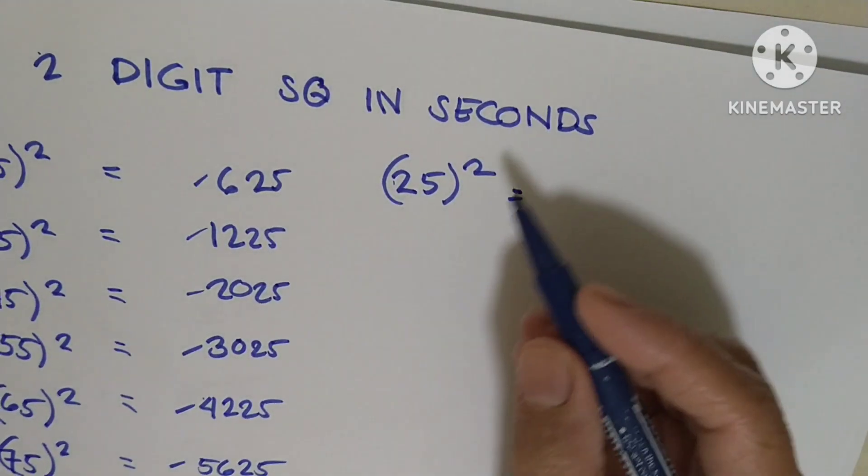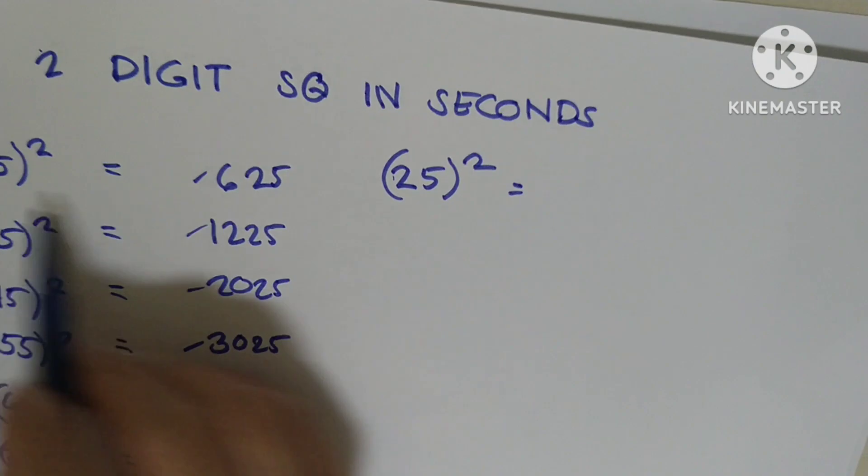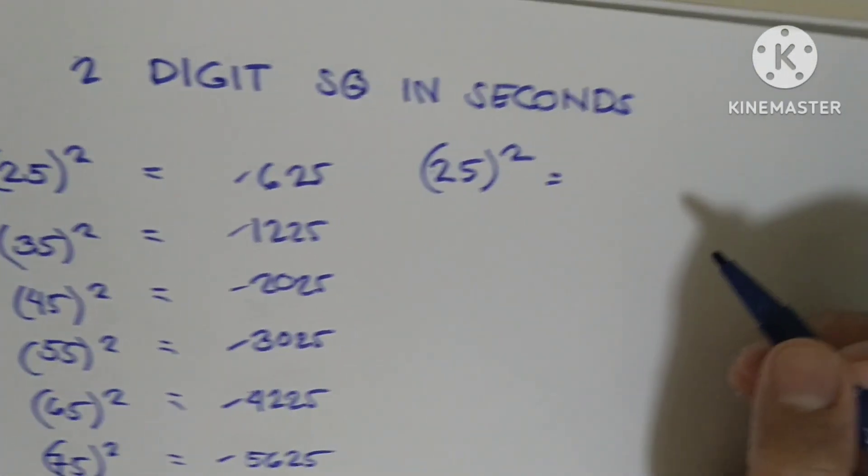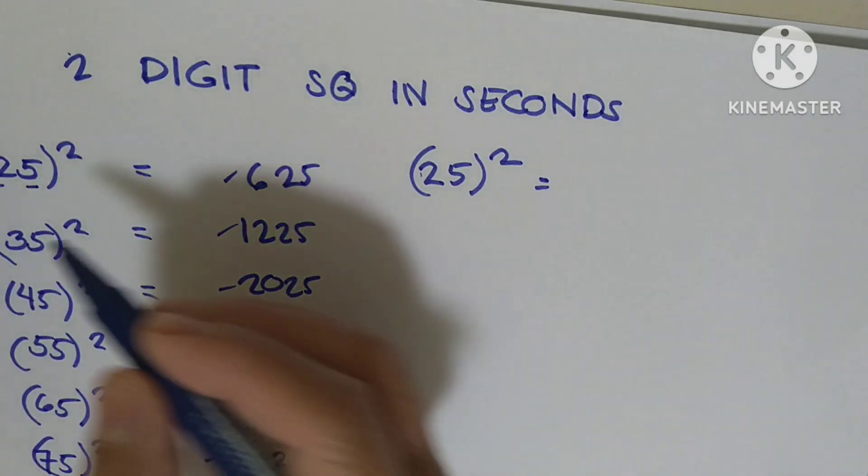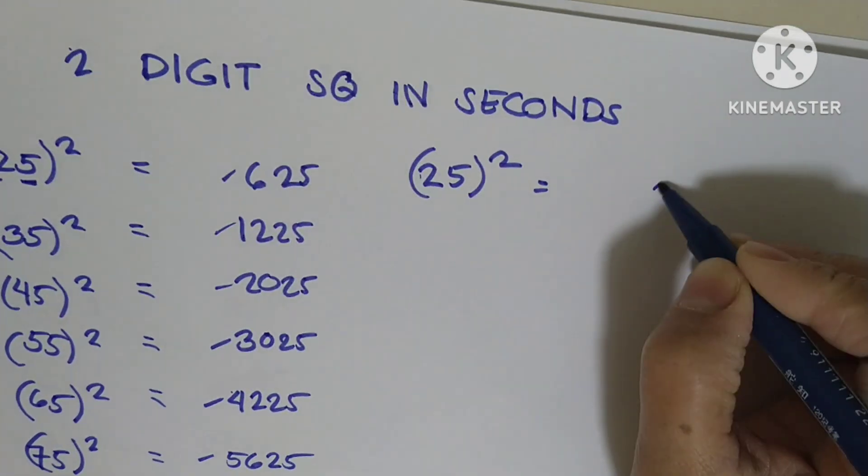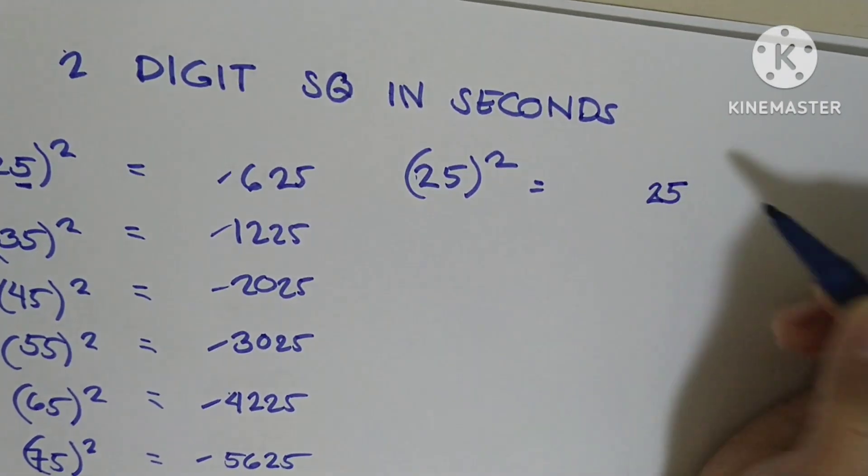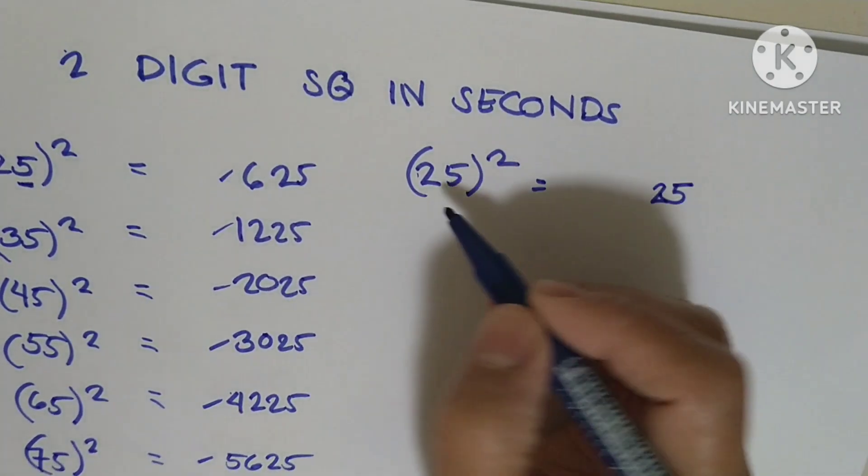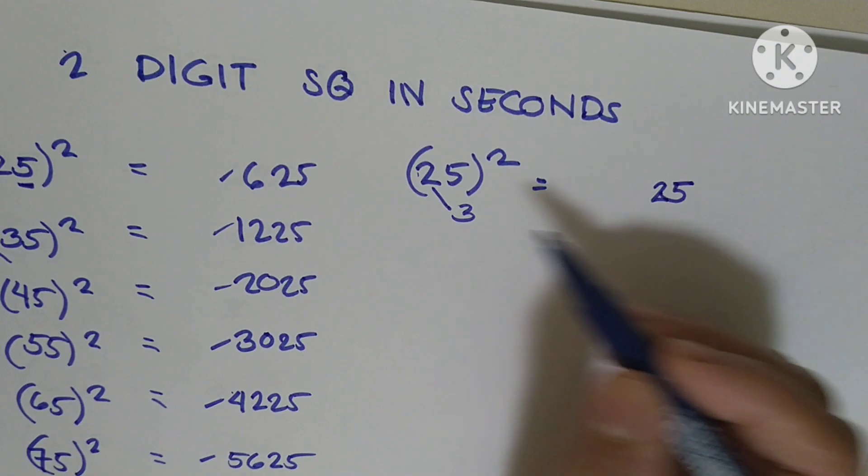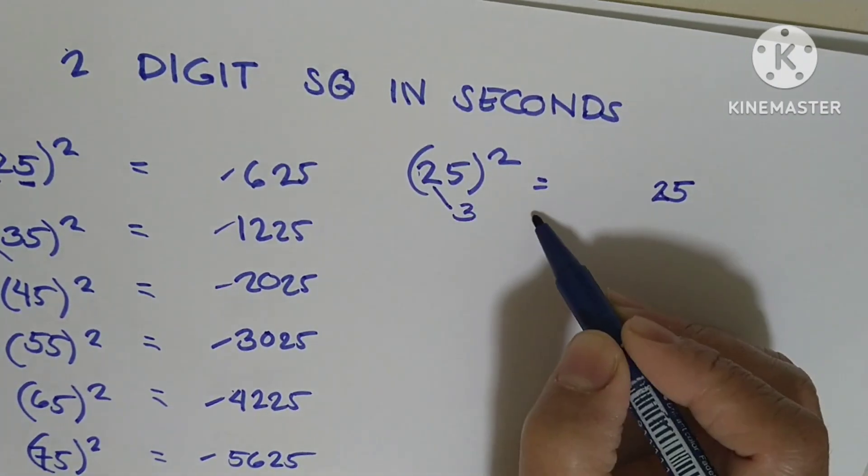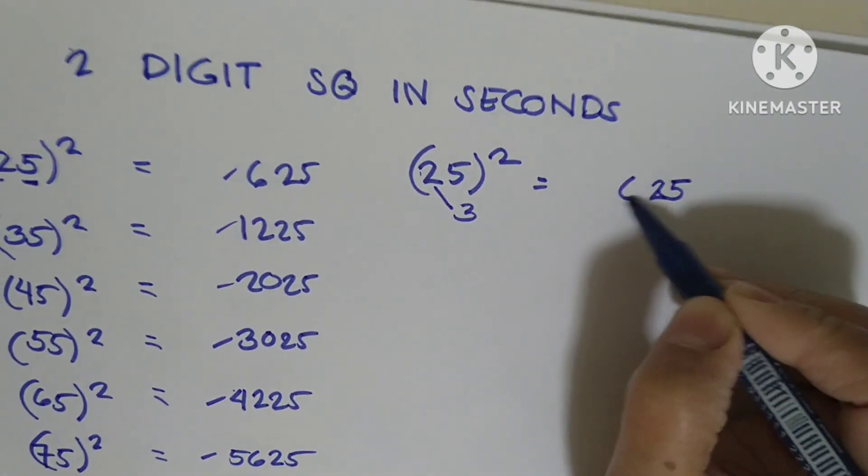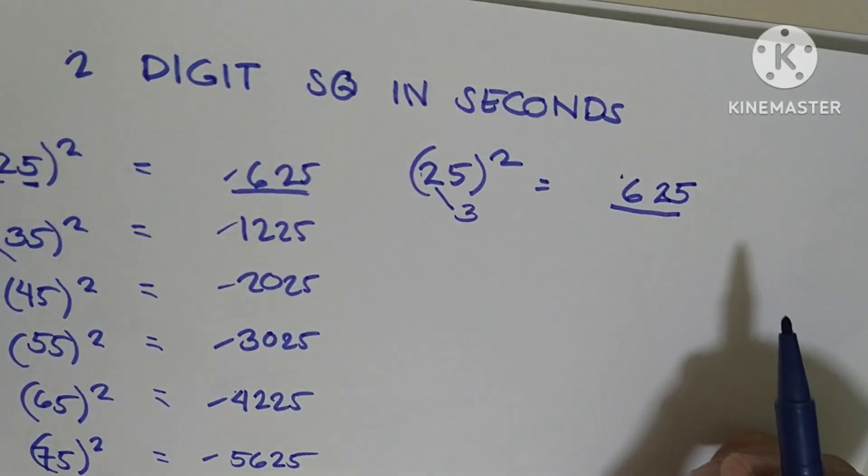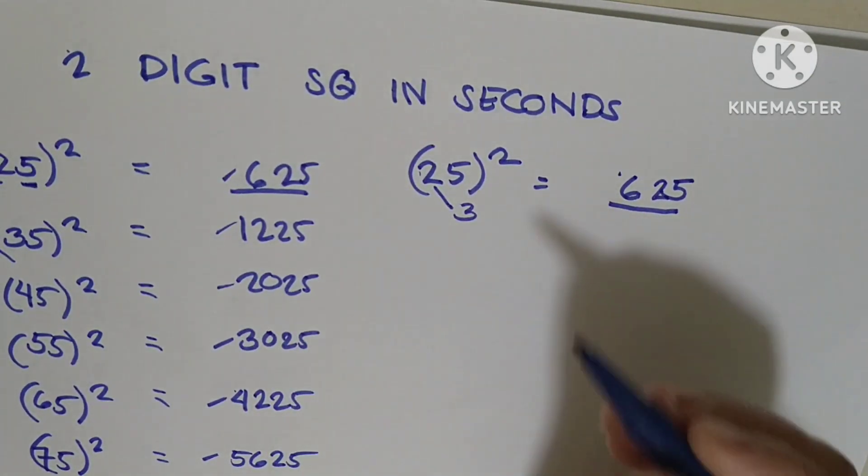For every number ending in 5, simply copy 5 times 5, which is 25. Then, what is the number next to 2? It's 3. So simply multiply 2 times 3 equals 6. So we get the answer: 625.